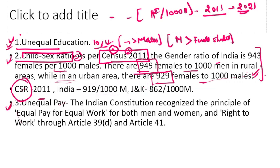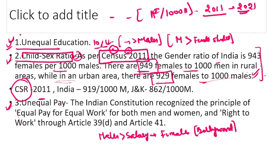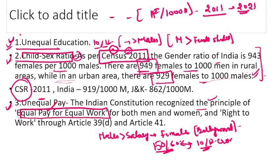Unequal pay — males को ज़्यादा salary मिलती है as compared to females। ये modern departments में भी देखने को मिला है; even Bollywood में भी यह बात उठी थी — actors 50-60 करोड़ charge करते हैं जबकि lead actress को hardly 10-12 करोड़ मिलता है। यह pay gap almost हर field में मिलेगी। Constitution में Articles 39D and Article 41 unequal pay से related हैं।